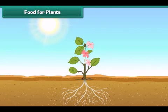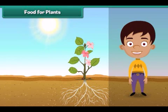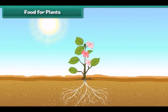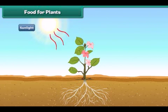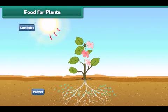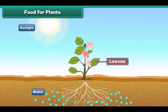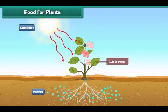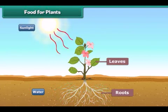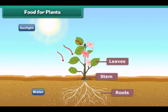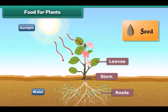Let us now understand where plants get their food. Plants make their own food with the help of sunlight. Plants take water from the soil and prepare food in their leaves. The plant takes up some part of the food and the rest is stored in its roots, stem, leaves and seeds.